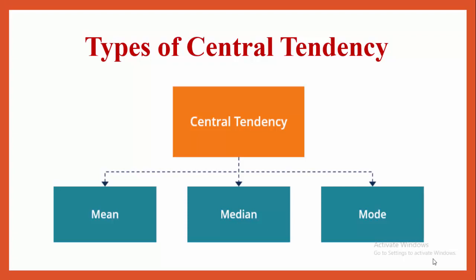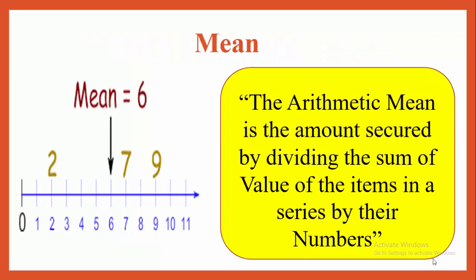First, mean. The arithmetic mean is the amount secured by dividing the sum of values of the items in a series by their numbers. Look at the picture — three scores are given: two, seven, and nine, and the mean of this series is equal to six.